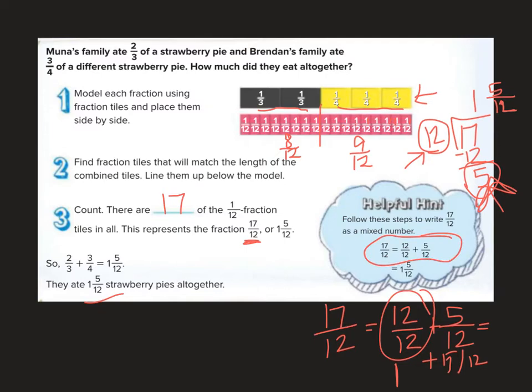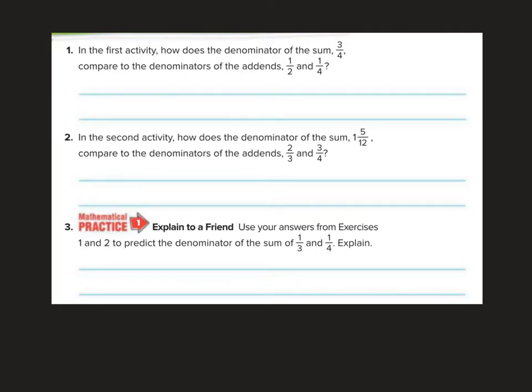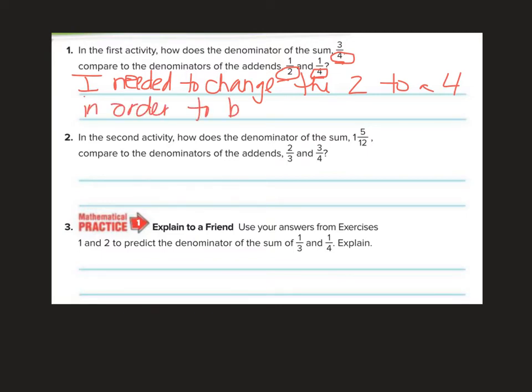So let's do some more problems. In the first activity, how does the denominator of the sum three fourths compare to the denominators of the addends, one half and one fourth? So you have a four here and a four here but a two here. I'm just going to say I needed to change the two to a four in order to be able to add the fractions.